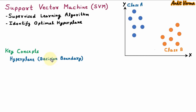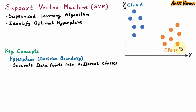Hyperplane is also called decision boundary. It is also named as decision plane or decision space. Hyperplane or decision boundary separates data points into different classes. For two-dimensional space, hyperplane will be a line.